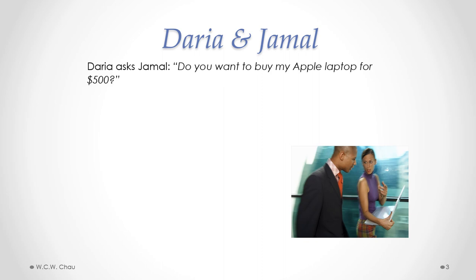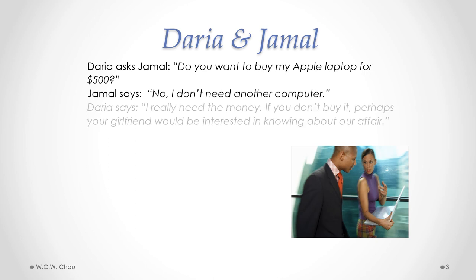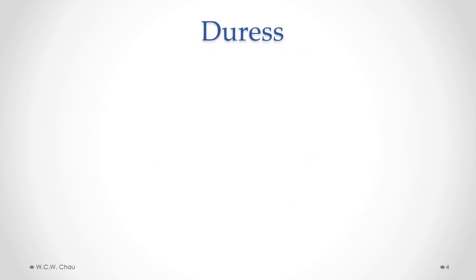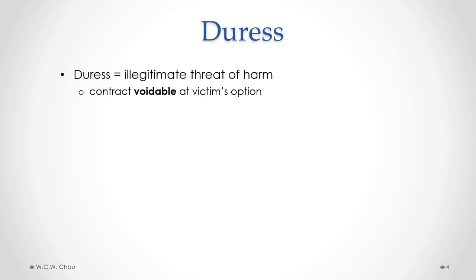Daria asks Jamal, do you want to buy my Apple laptop for $500? Jamal says no, I don't need another computer. Then Daria says, I really need the money. If you don't buy it, perhaps your girlfriend would be interested in knowing about our affair. Jamal replies, okay, I'll buy your computer. Does Jamal have to buy Daria's laptop? Let's look at the contractual defect called duress. Duress is considered to be some kind of illegitimate threat of harm. If there is duress, a contract is considered to be voidable at the victim's option.